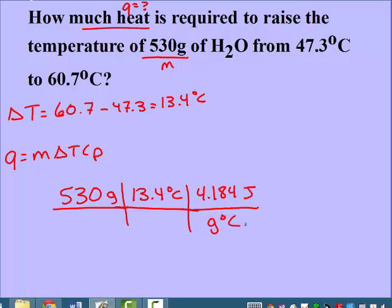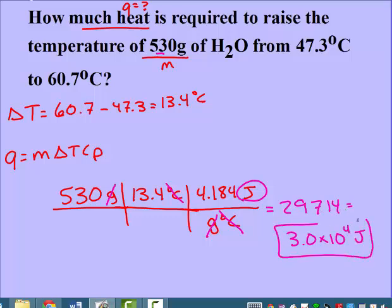Since it didn't specify what they wanted their heat in—joules or calories—you could have used either of water's specific heats. Make sure that you are canceling your units, and so I'm left with joules. Multiplying that all out, you get this, but we want two significant figures since that's our least number. So 3.0 times 10 to the 4th joules.